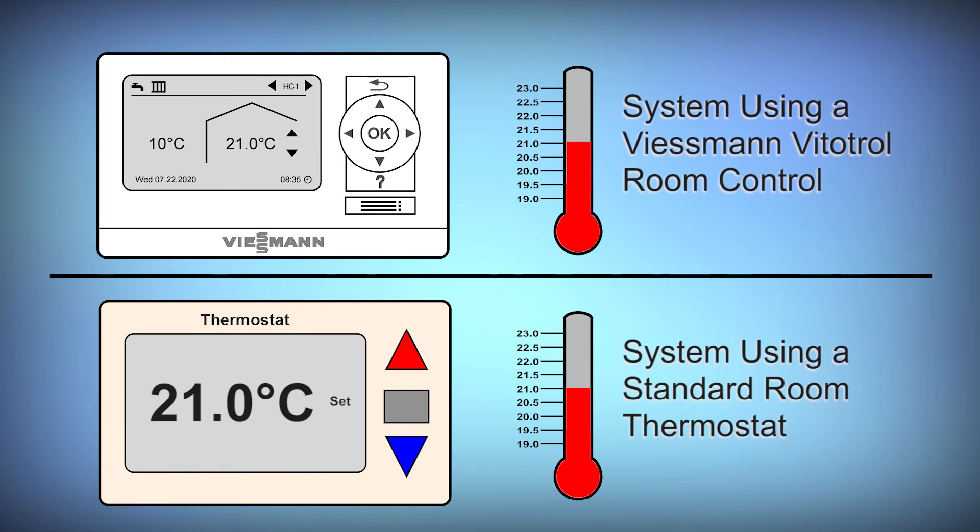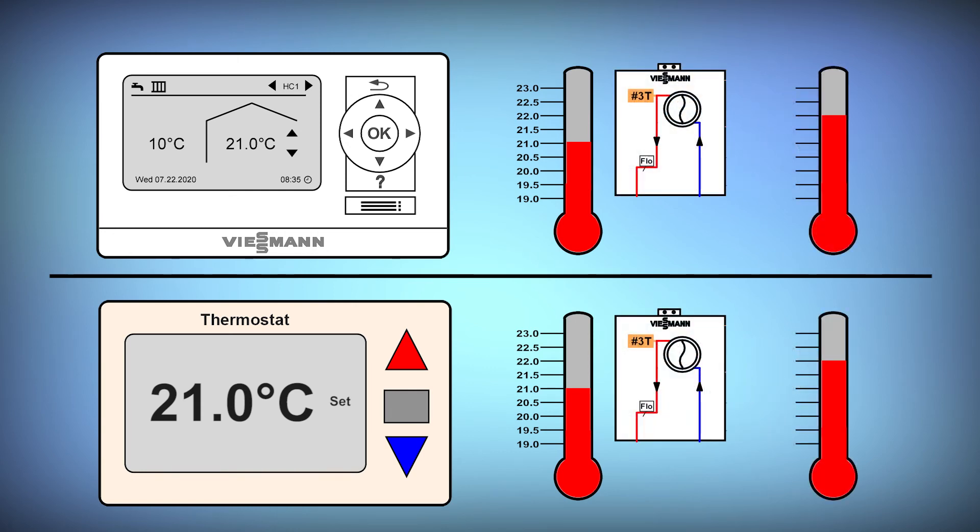When we compare controlling room temperature with a traditional thermostat to a Wiesmann Vitatrol room control we can see that when using a room thermostat the differential built into the thermostat plus the reaction time of the system means that there's a fairly large room temperature swing as well as a fairly large water temperature swing. Whereas because the Vitatrol is communicating in real time with the boiler the boiler can react to load changes in the space quickly and efficiently reducing the swing in room temperature and the swing in system temperature.